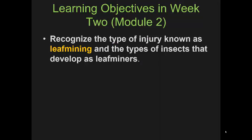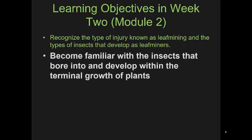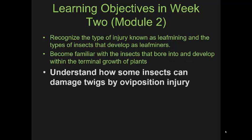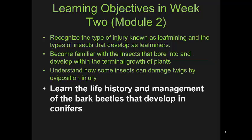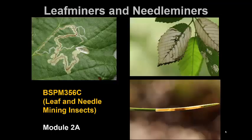The main things we're going to try to get through this week are to recognize the type of injury known as leaf mining and the types of insects that develop as leaf miners; to become familiar with insects that bore into and develop within the terminal growth of plants, the tips of branches, and the top leader of a pine. We'll also cover oviposition injury and start in on bark beetles on conifers.